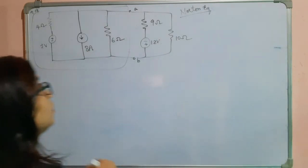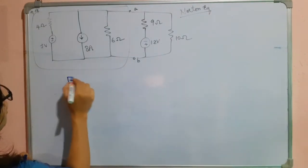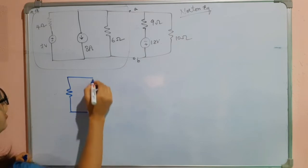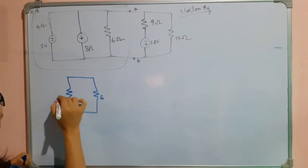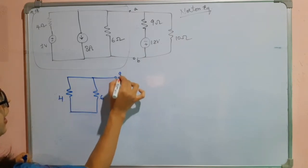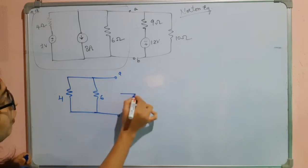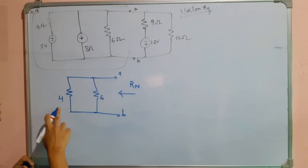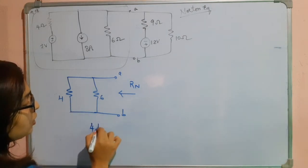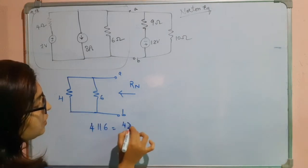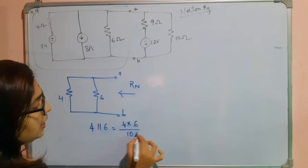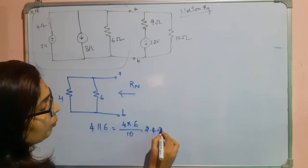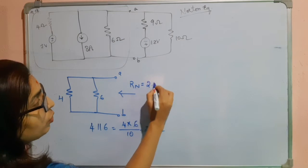So here we have 4 ohms. Here it is open circuit. This is shorted. Again we have 6 ohms and here the terminals A and B. That means we have to find the Norton's resistance through these terminals. We can say that 4 and 6 are in parallel, so it will be equal to 4 into 6 divided by 4 plus 6, that is 10. So that is 2.4 ohms. So Rn is 2.4 ohms.